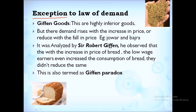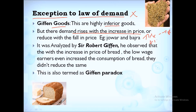Now let us see the exceptions to the Law of Demand — a very important question from the board's point of view. When does the Law of Demand fail? The first exception is Giffen goods, which are highly inferior goods. In inferior goods, there is a negative income effect — as income increases, demand decreases. But in Giffen goods, demand rises with an increase in price. Here, if price increases, quantity also increases, and if price decreases, quantity also decreases.